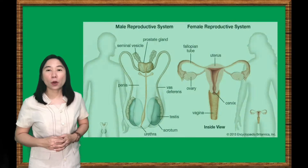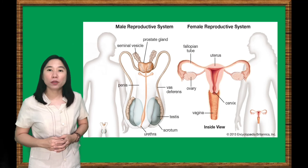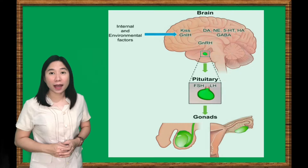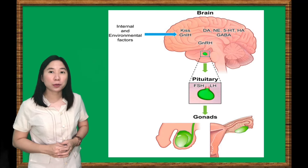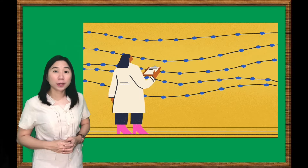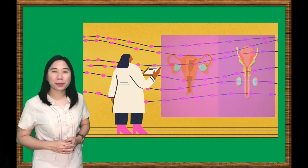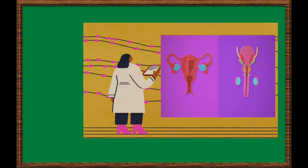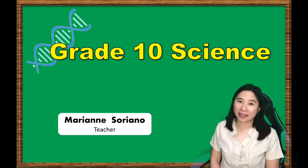Always remember that hormones play an important role in both male and female reproductive systems. With the help of the hypothalamus, the pituitary gland controls the functions of both the testes and the ovaries. These hormones keep the reproductive system properly functioning. I hope you learned and enjoyed our lesson. This is Marian Soriano. See you in the next lesson.